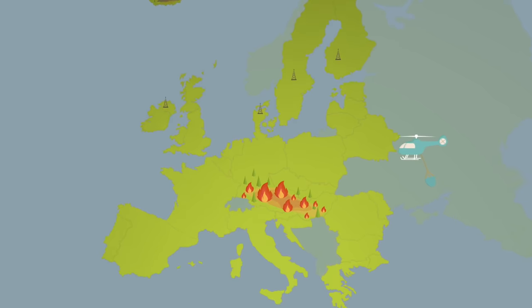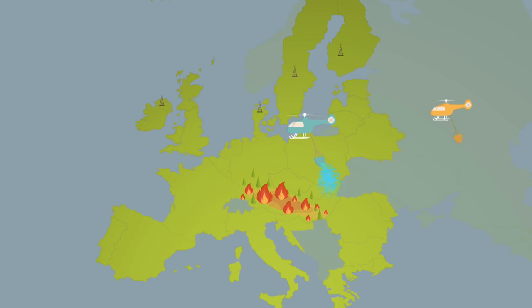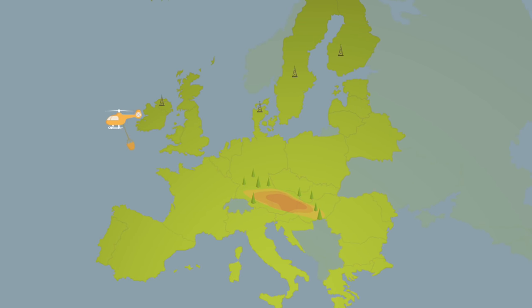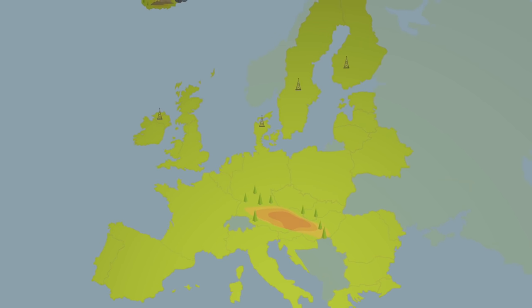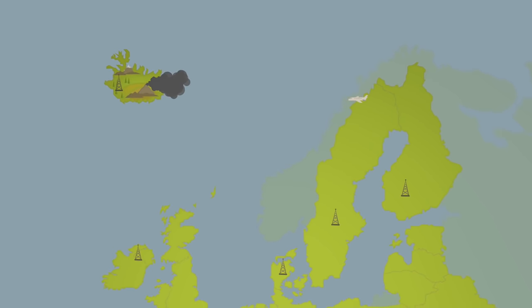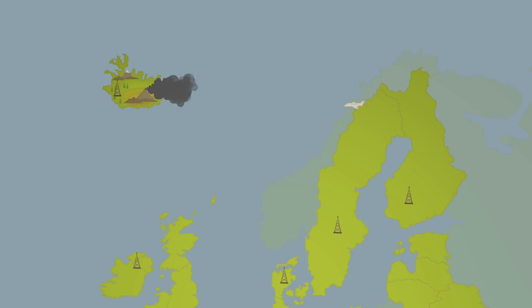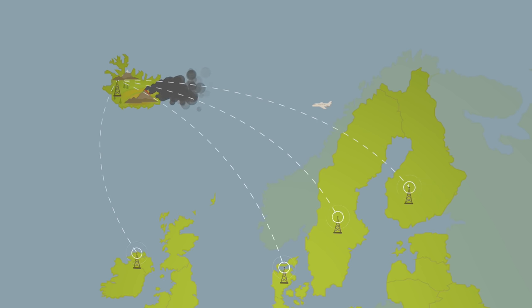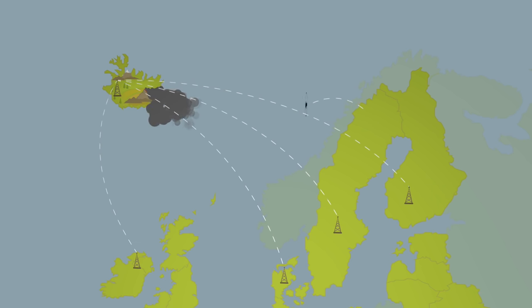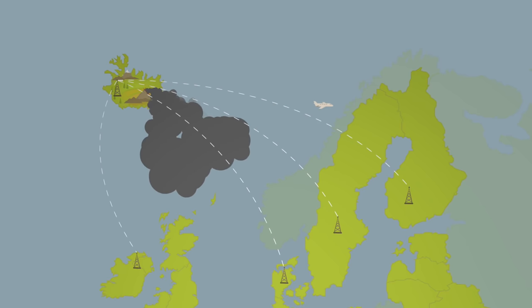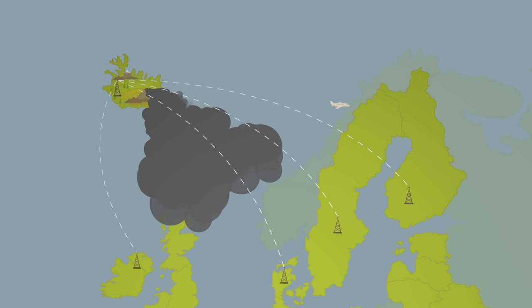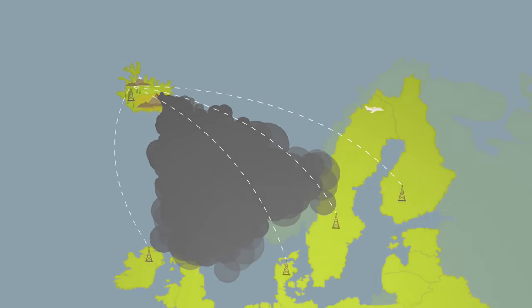This becomes even clearer in times of crisis when the right choices need to be made quickly. Take Iceland for example, where a volcano erupted in 2010. Several countries needed data on air pollution and air quality. This data had to be comparable across borders for decision makers in the health and transport domains.